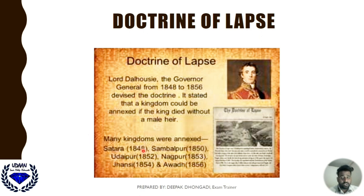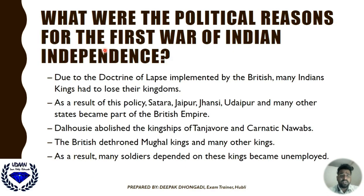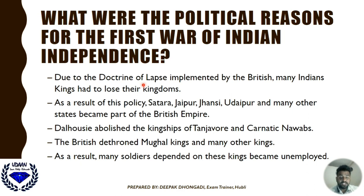Many kingdoms were annexed by the British because of the doctrine of lapse policy. These were Satara in 1848, Sambalpur in 1850, Udaipur in 1852, Nagpur in 1853, Jhansi, and Avadh. Due to this policy, many Indian kings lost their kingdoms, and states like Satara, Jaipur, Jhansi, Udaipur and many others became part of the British Empire.